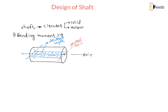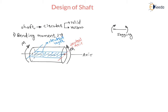Whenever the component is subjected to a sagging bending moment, on the neutral layer there is no stress. The length of the neutral layer before bending and after bending is the same. Therefore on the axis there is no stress — on the neutral layer there is no stress.